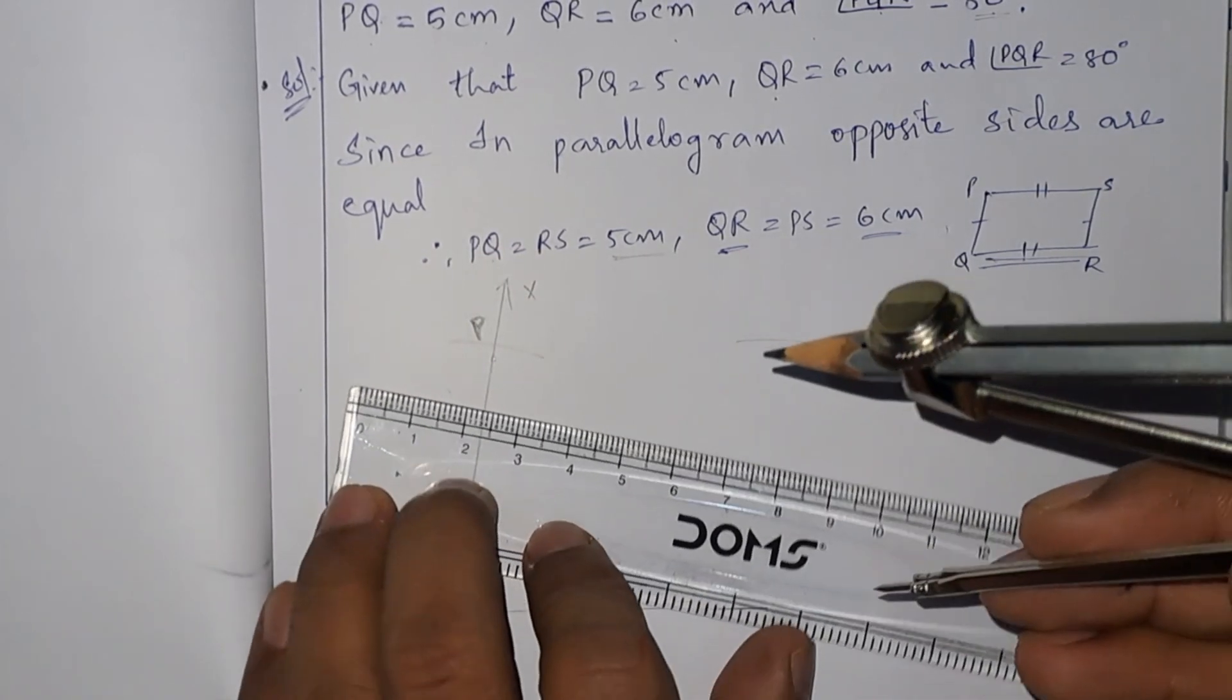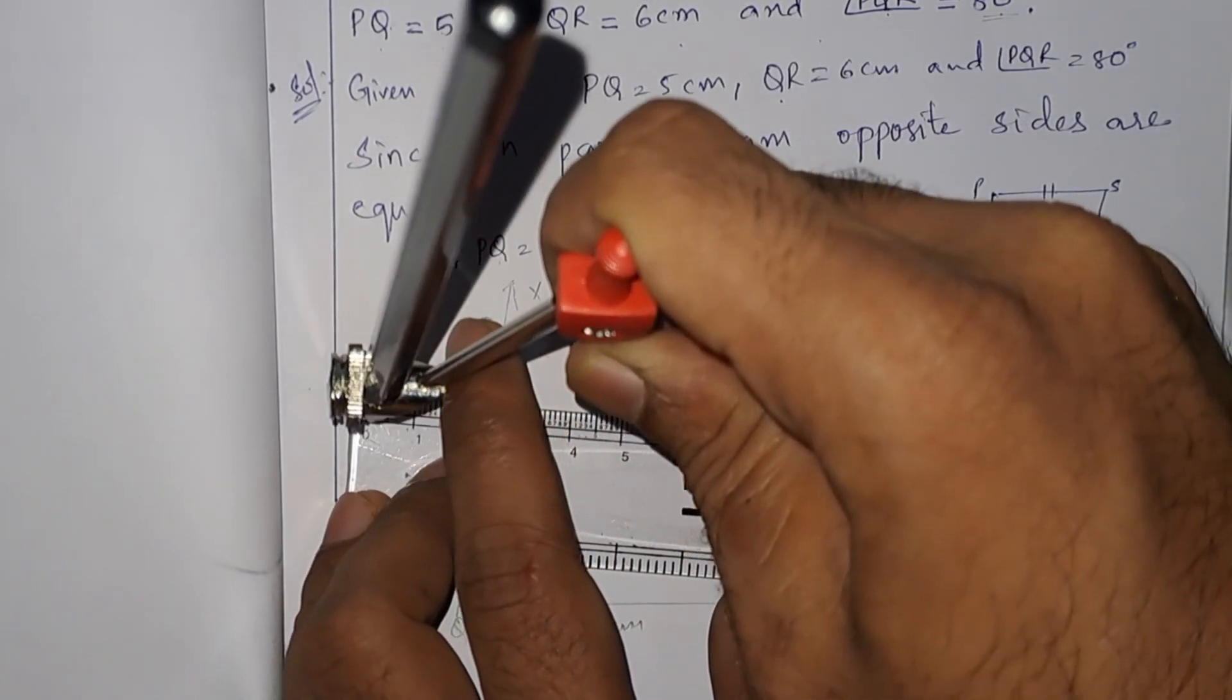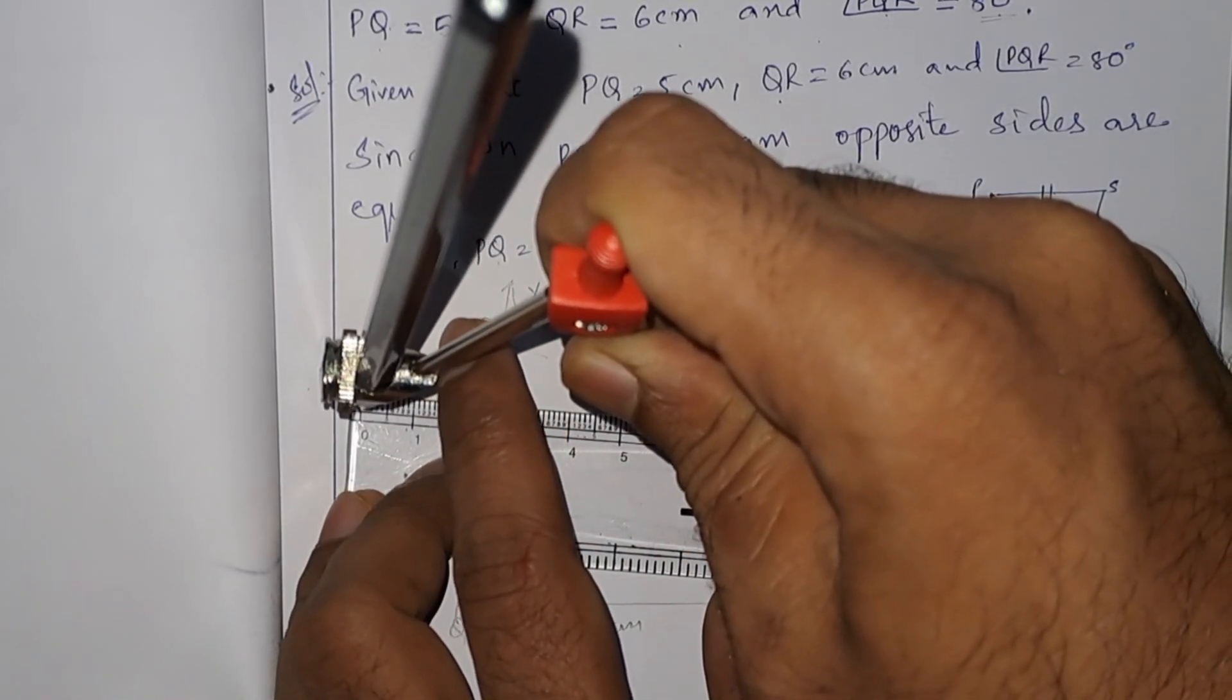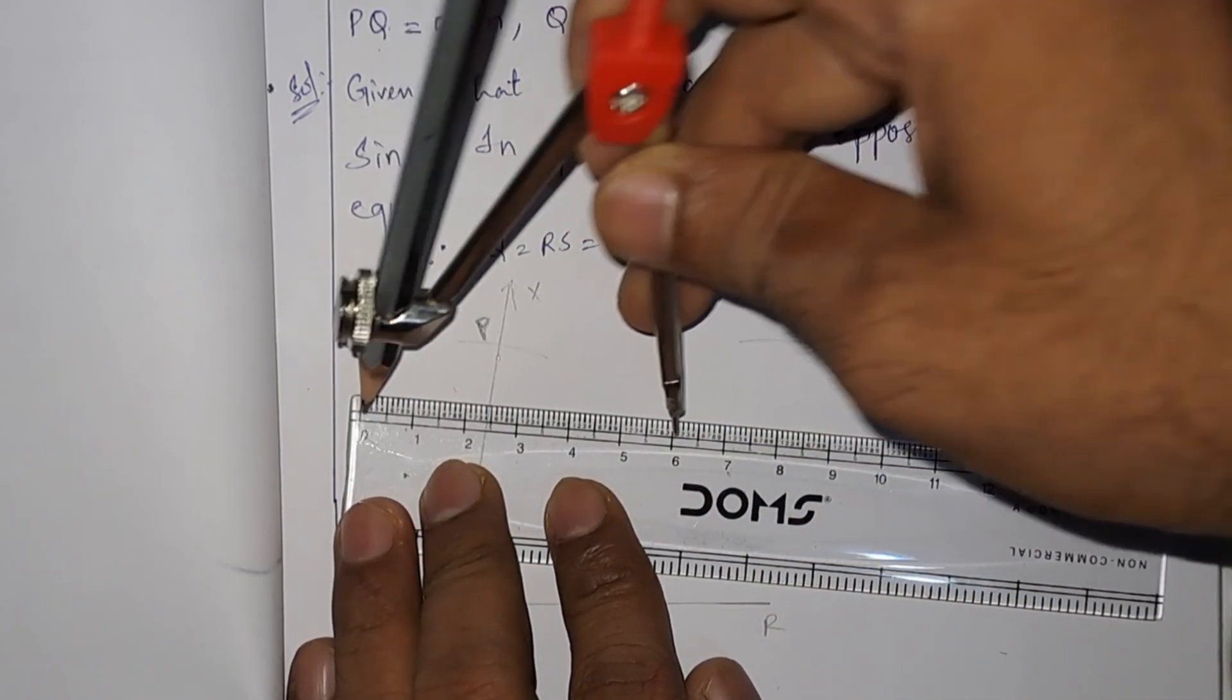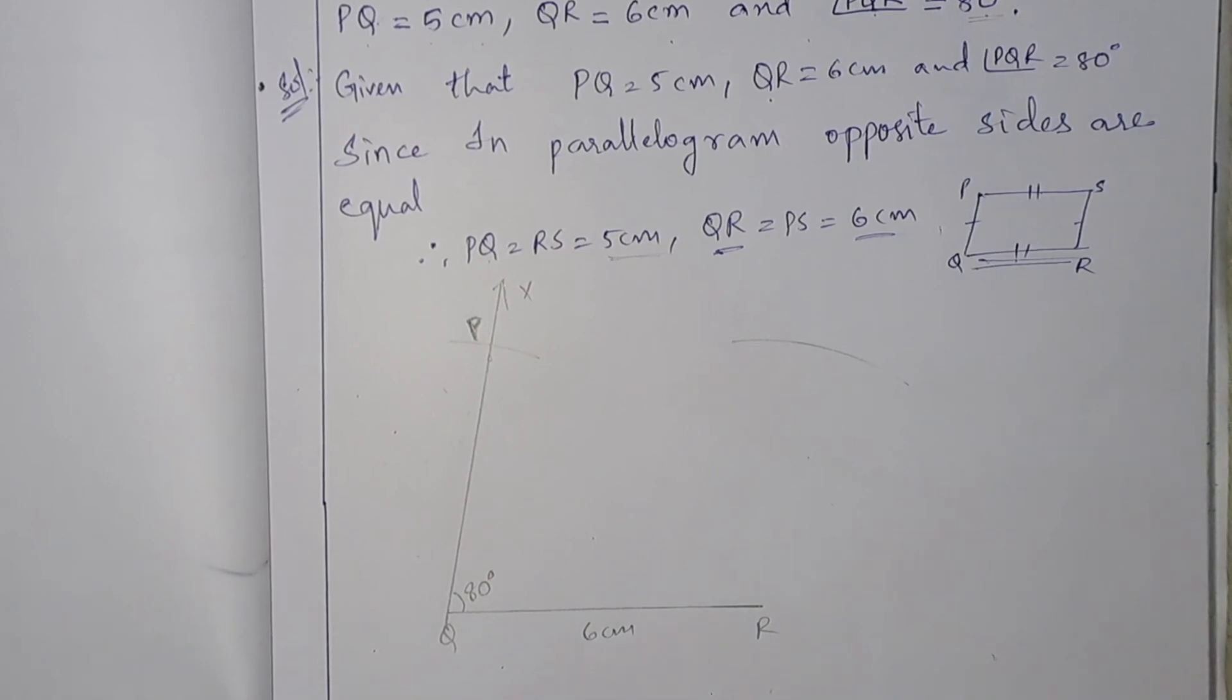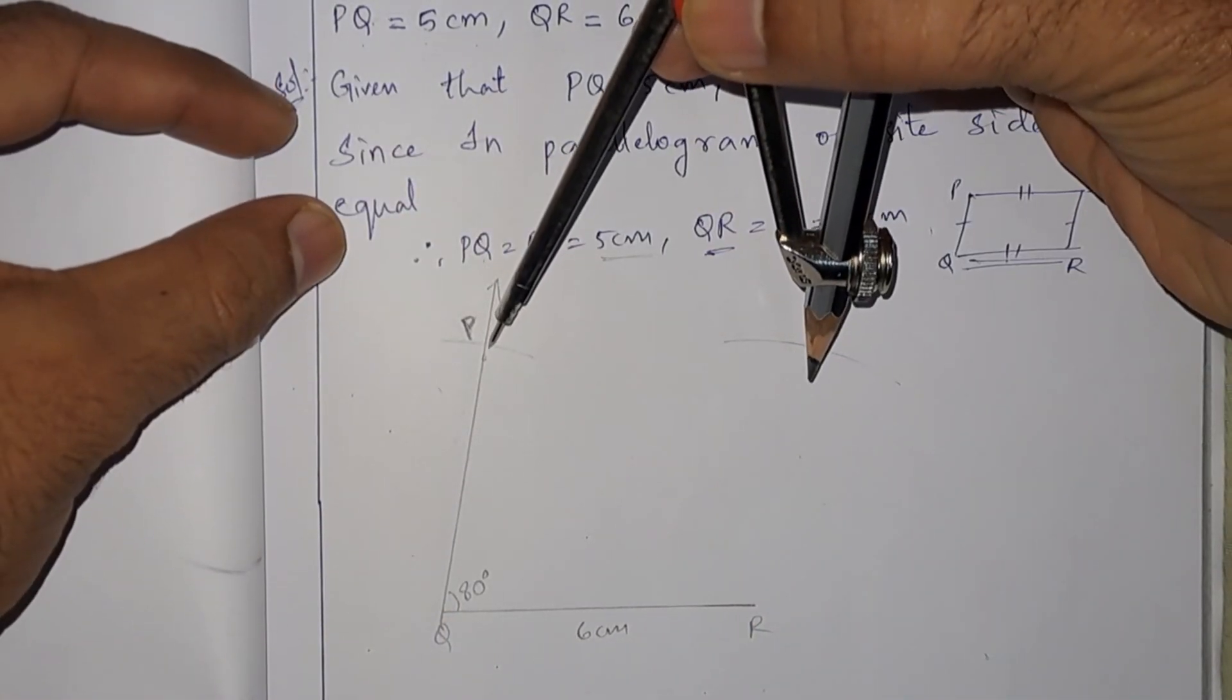Now we will take 6 centimeter radius. This is the 6 centimeter radius. We will draw an arc from P.